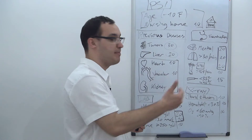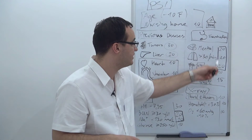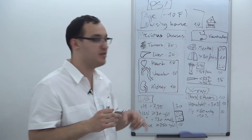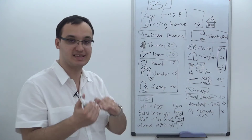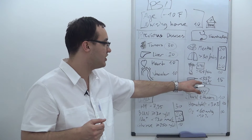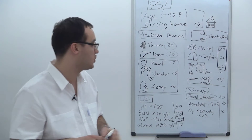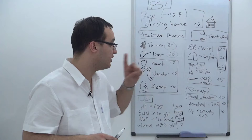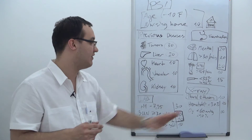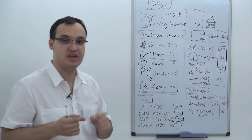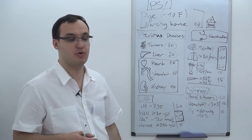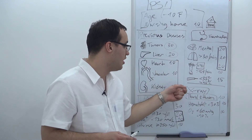Mental status change, breathing rate over 30, and blood pressure under 90 each give 20 points; pulse over 125 gives 10 points. For fever: if temperature is more than 40°C or less than 35°C, give 15 points. If the temperature is between 35 and 40 — for example 36, 37, or 38 degrees — you give no points.